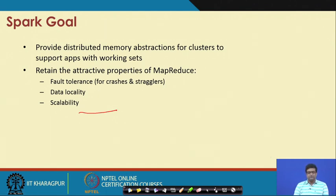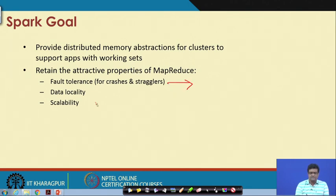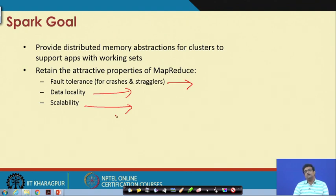The goal is to provide distributed memory abstractions for clusters to support applications with working sets. Working sets are basically the distributed data sets on which you do various computations. At the same time, you want to retain the attractive properties of fault tolerance, data locality, and scalability, and additionally the property of ease of use — you should be able to automatically schedule the tasks as they come.